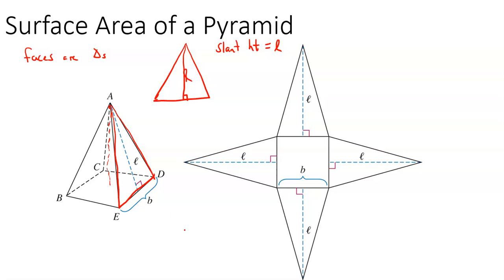If you pull that triangle apart, you realize that all four triangles are your faces. So if I want the lateral area, it's the sum of those four faces. If you have a pyramid where all base sides are the same length, you just find one face and multiply by the number of sides.